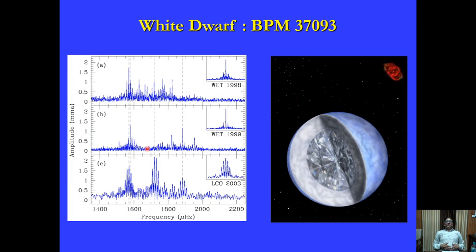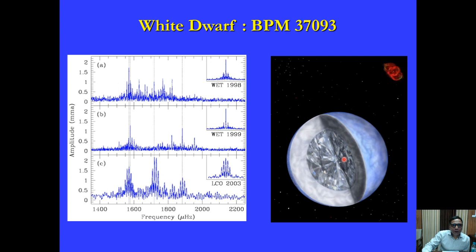Using astro-seismology, one can see inside a star using its oscillations — similar to how ultrasound images the inside of a wall. Here I have shown a Fourier analysis of the white dwarf BPM 37093, observed from ground-based telescopes. The core of this white dwarf is made of carbon — a crystallized diamond. Using astro-seismic techniques, people have probed the interior of this white dwarf all the way to the core, because different modes pulsate to different depths.